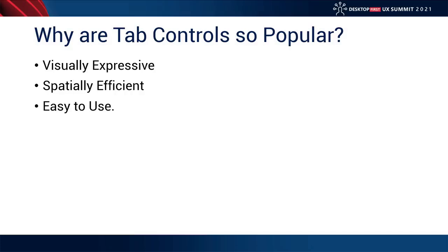Probably the most important reason why tabs are so popular is they are extremely easy to use. Because of the visual expressive nature of it, their affordance is obvious — how you interact with that control is really simple and straightforward because it takes some concept from the real world and blends it into the digital world. So when we see tabs, we understand that each of those tabs represents a different piece of content, whether that's settings in a dialog box, different views of a document, or multiple documents.